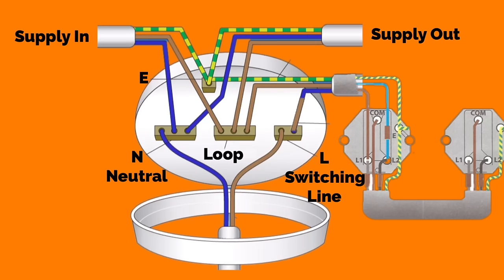With a two-way switching configuration, the drop to the first switch still is in twin and CPC or twin brown. We show twin and CPC cables here, but the terminations will now not be in common and L1. The terminations coming down will come down into L1 and L2, leaving the common terminal without a connection at the moment.